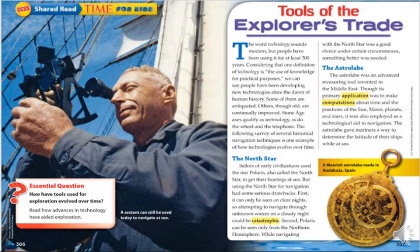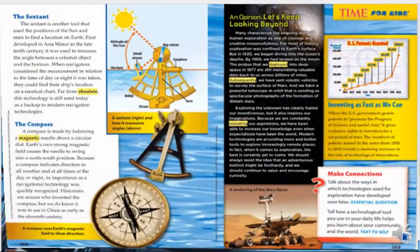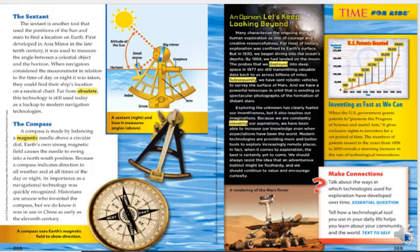We are not going to read the whole text, but as you can see there are subtitles. The North Star is one of the tools, the astrolabe is one of the tools, the sextant, the compass — all of these are tools that have been used by explorers to discover new things. Throughout the live sessions, we will discover more about what each one was used for and how it helped in exploring something new.